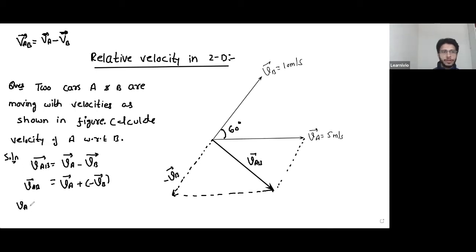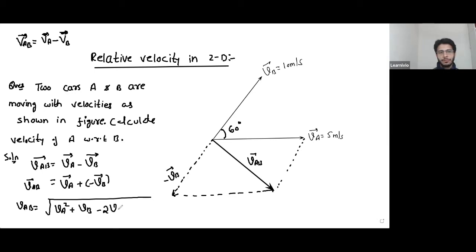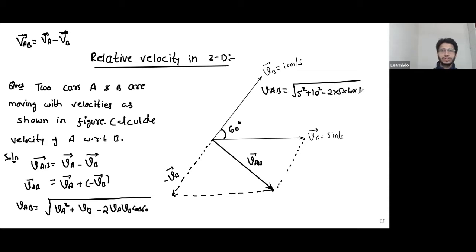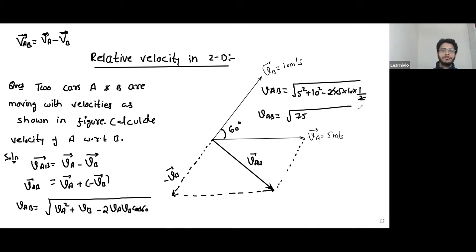To calculate the magnitude of VAB, we use the vector subtraction formula: VAB equals square root of VA squared plus VB squared minus 2·VA·VB·cos(theta). Substituting: VA is 5, so 5 squared is 25; VB is 10, so 10 squared is 100; and 2 × 5 × 10 × cos(60°) equals 2 × 50 × half equals 50. So VAB equals square root of 25 plus 100 minus 50, which is square root of 75, giving 5√3 m/s.